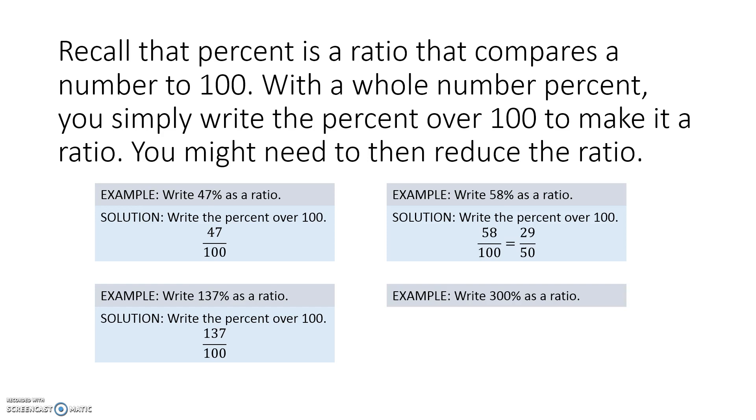Now let's write the ratio of 300%. We put the 300 over the 100, and we reduce it so that we get the ratio of 3 to 1. Remember, when writing ratios, you do not convert them to mixed numbers, and you do not ignore the 1 in the denominator.